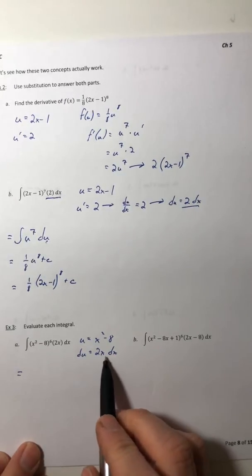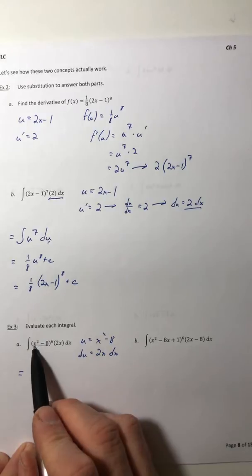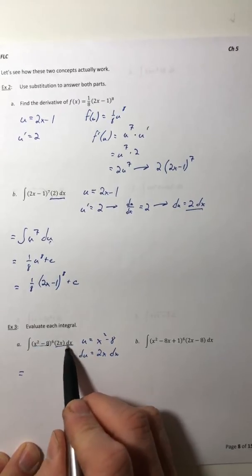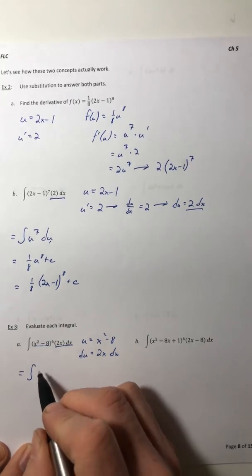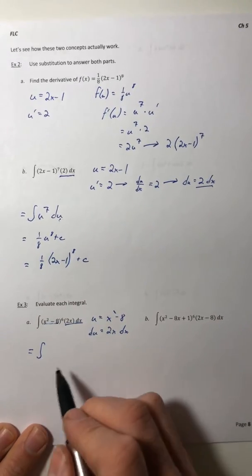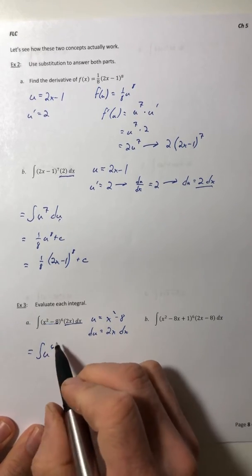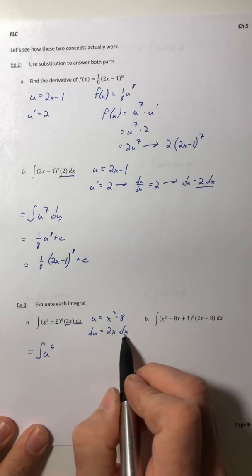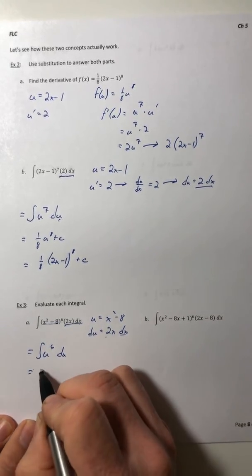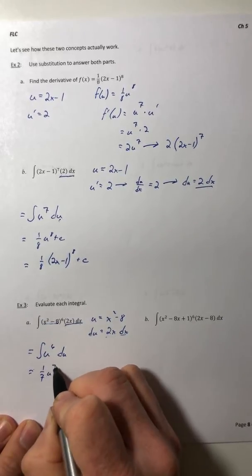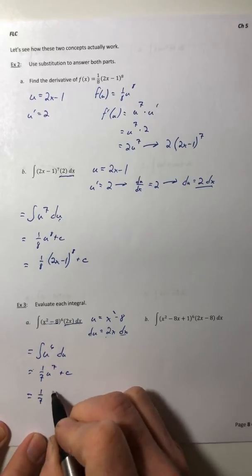You're making sure that everything is accounted for, so this can change into a u and then all of this can change into the du. You don't want a mixture of x's and u's inside the integral. So we have u to the sixth and then the 2x dx, that's the du, and then integrate and change it back into terms of x.